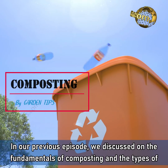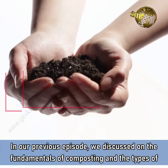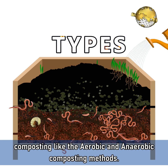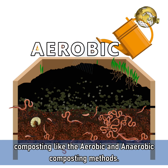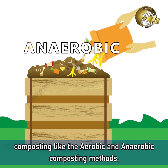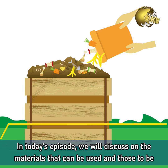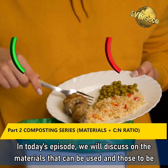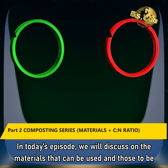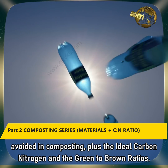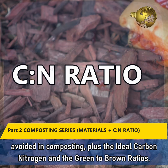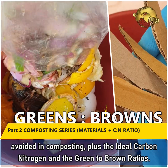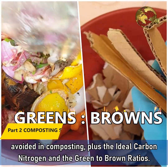In our previous episode, we discussed the fundamentals of composting and the types of composting, like the aerobic and anaerobic methods. In today's episode, we will discuss the materials that can be used and those to be avoided in composting, plus the ideal carbon-to-nitrogen ratio and the green-to-brown ratio.